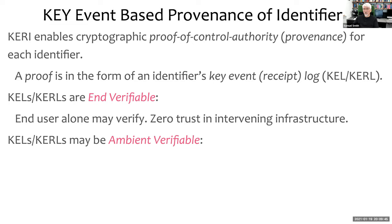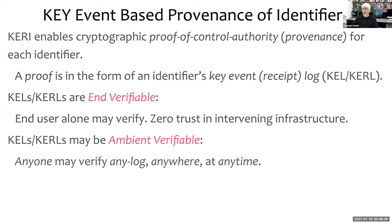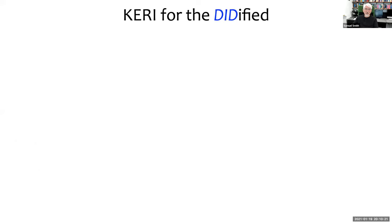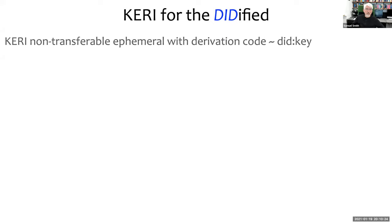Ambient verifiability means there are sufficient watchers — nodes that keep copies of logs and check for duplicity — such that anyone can verify any log anywhere at any time and know it hasn't suffered any compromise or duplicity. So KERI is really a self-certified root of trust, plus something comparable to the certificate transparency project for ambient verifiability, plus an algorithm for consensus among witnesses, plus key recovery and post-quantum security.